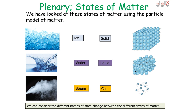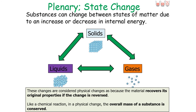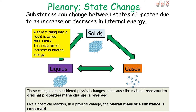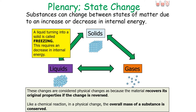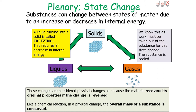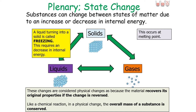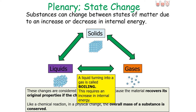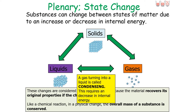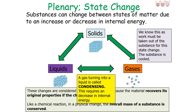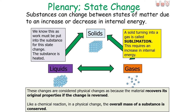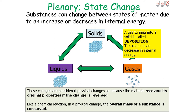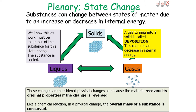The different names for state changes are: solid to liquid is melting, requiring an increase in internal energy, occurring at the melting point; liquid to solid is freezing, requiring a decrease in internal energy, also occurring at the melting point; liquid to gas is boiling, requiring an increase in internal energy, occurring at the boiling point; gas to liquid is condensation, requiring a decrease in internal energy, also occurring at the boiling point; solid to gas is sublimation, requiring an increase in internal energy; and gas to solid is deposition, requiring a decreased internal energy.